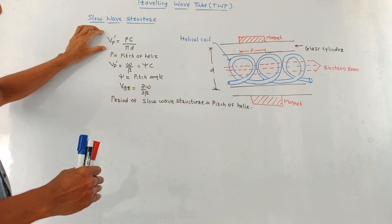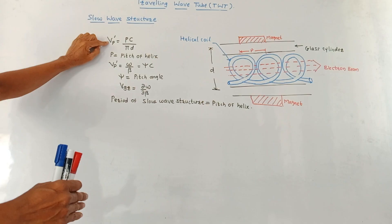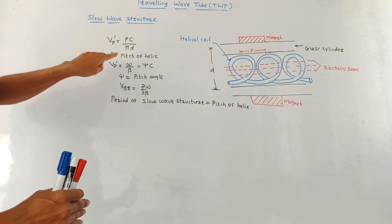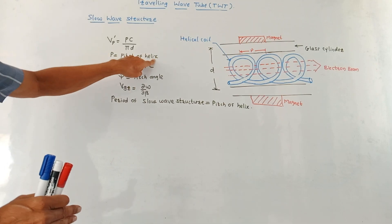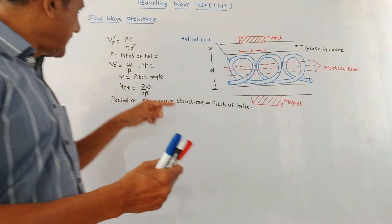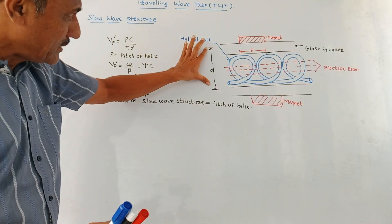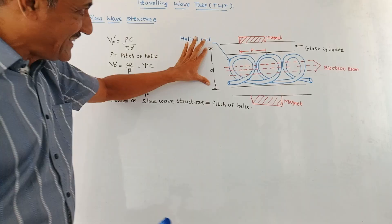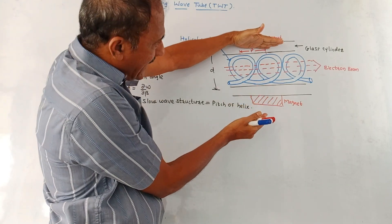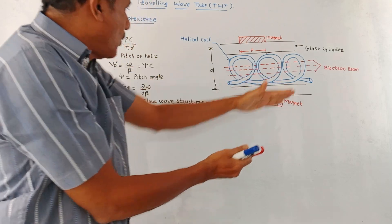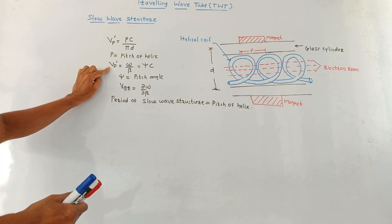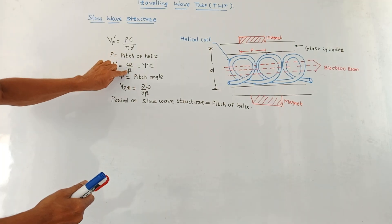Now there is one term which is phase velocity, vp dash, which is given by pc upon pi d, where p is the pitch of helix, c is the speed of light, we know it is 3 into 10 raised to 8 meters per second, d is the distance between these two glass cylinders. We are using two glass cylinders, one at the upper end and one at the lower end. So d is the distance between them.